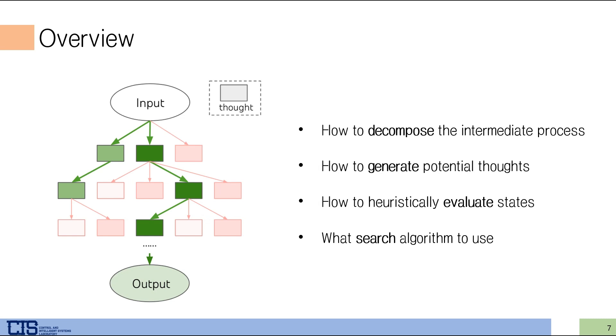Decomposing inputs makes the model generate various thoughts, leading to more deliberate processing. Generating potential thoughts depends on the property of thought space, and they use two different types of prompts. Evaluating states is the most important part of this paper. From this step, they move to reasonable thoughts such as backtracking and look-ahead, looking ahead with graph search algorithms.